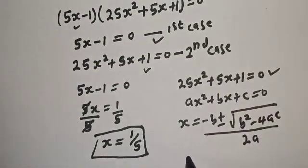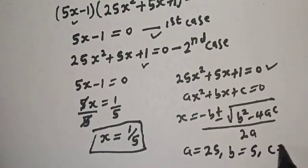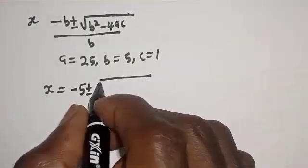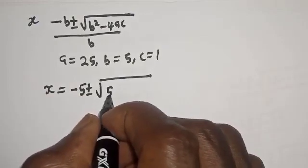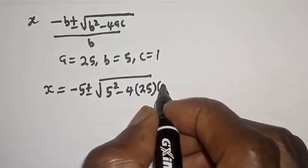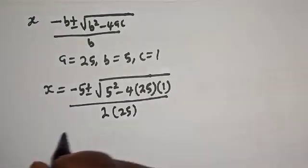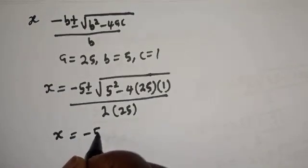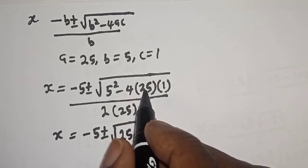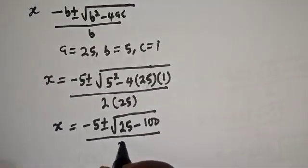From this equation, a is equal to 25, b is equal to 5, and c is equal to 1. Substituting, s is equal to minus 5 plus or minus square root of 5² minus 4 times 25 times 1, over 2 times 25. That gives s equal to minus 5 plus or minus square root of 25 minus 100 all over 50.